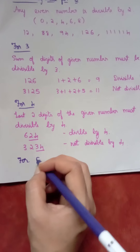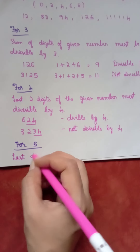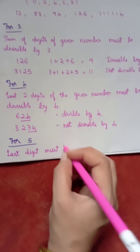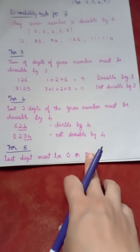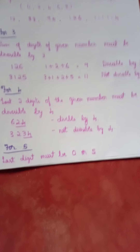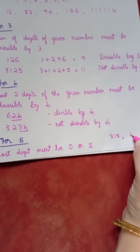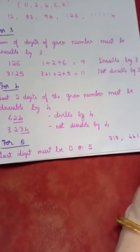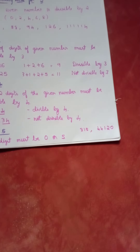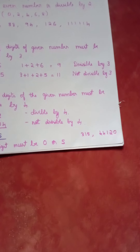Next, for 5. For a number to be divisible by 5, the last digit must be 0 or 5. If you have seen the multiplication table of 5, it goes 5, 10, 15, 20, 25, 30 — so if the last digit is 0 or 5, the number is divisible by 5. For example, you can take any number like 315 or 44120 — any number with a large number of digits. The digit in the unit's place must be 0 or 5.